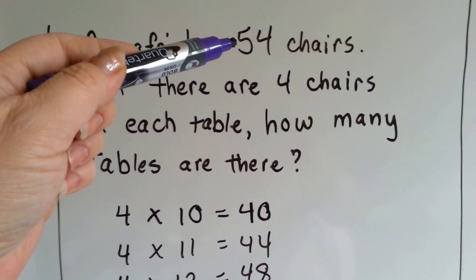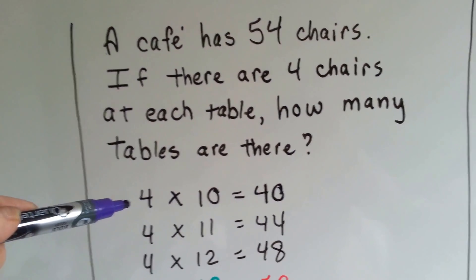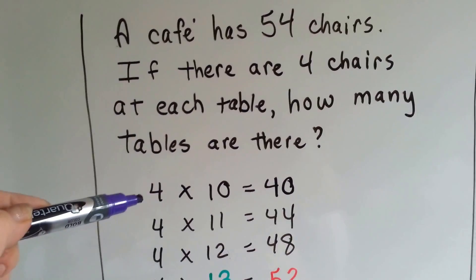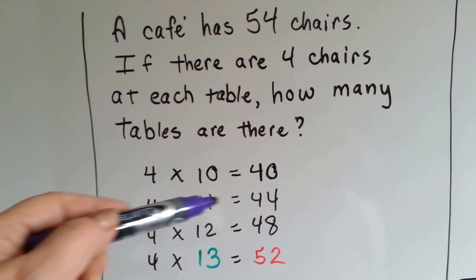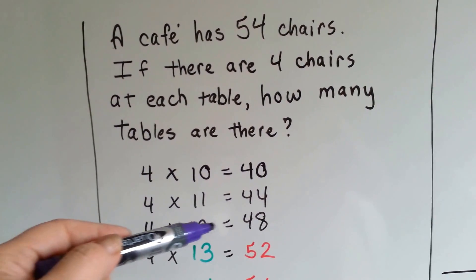Well, if 54 is too big of a number for you to work with, start with a number you know, like 4 times 10. Slowly build it up. 4 times 11 is 44. So 4 times 12 is 48.